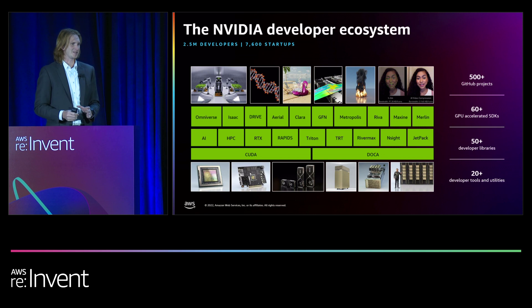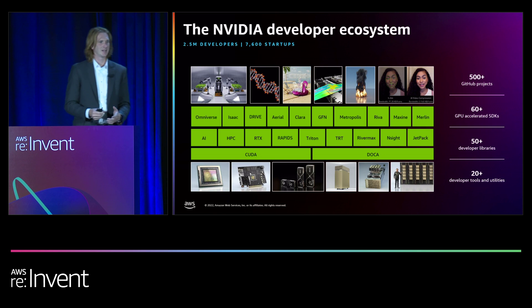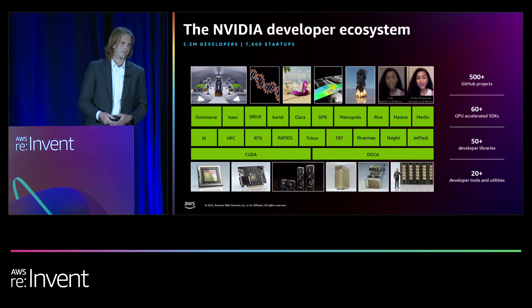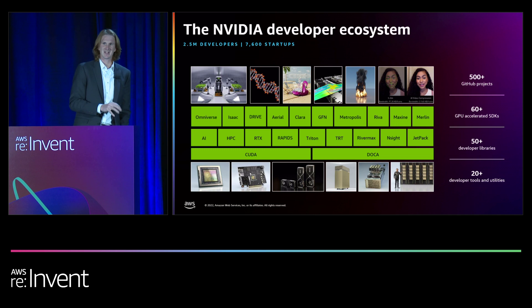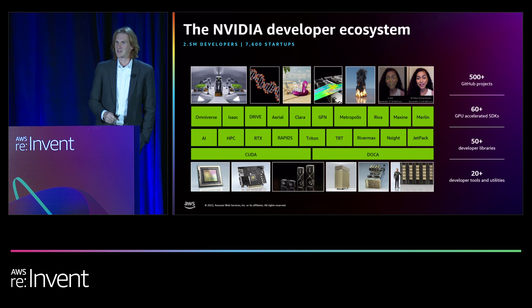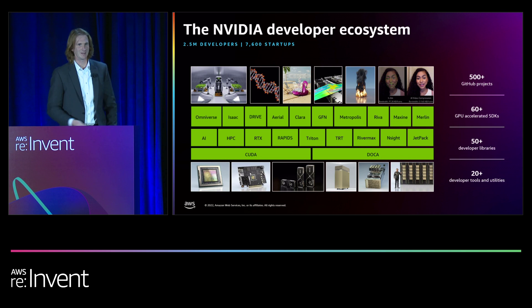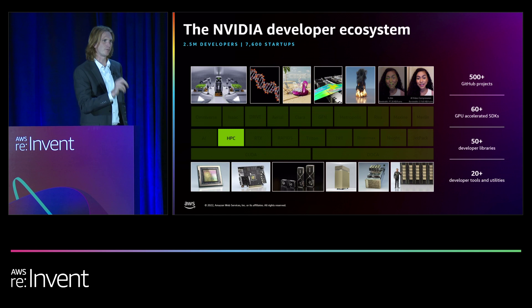The software side of NVIDIA is enormous — we are absolutely a software company. With over 3 million developers and over 8,000 startups working with our developer ecosystem, we have over 500 GitHub projects, at least 60 accelerated GPU SDKs, and over 50 developer libraries. The ecosystem spans every area of computing. Today I'm just going to focus on one corner: the high-performance computing corner of the NVIDIA software ecosystem.